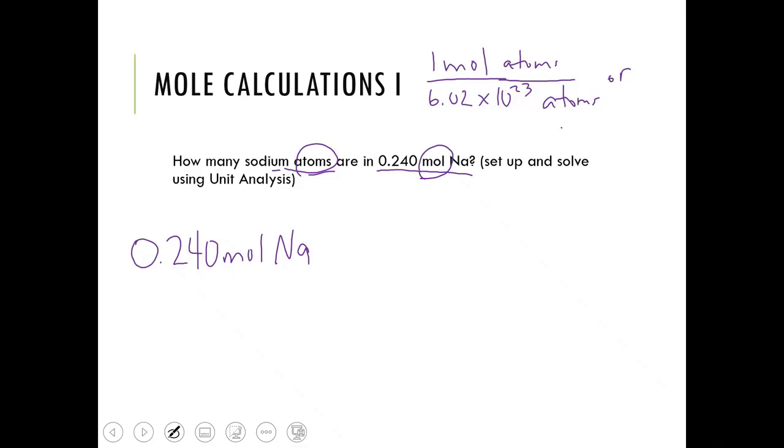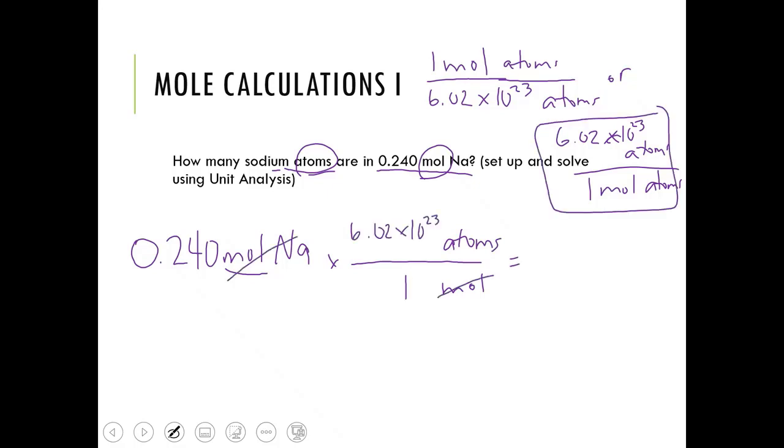And we also know that we can write the reciprocal of this, and we can say, well, that's also equal to 6.02 times 10 to the 23rd atoms for every 1 mole of atoms. So now we need to look at this problem and say, all right, I have moles. I need to get rid of moles. So I need moles on the bottom and atom on top. So I would use this conversion factor. Moles and moles will cancel out.